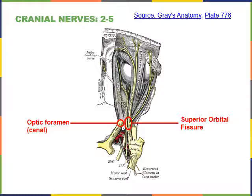Cranial nerve four extends from the midbrain to the superior oblique muscle, which causes rotation of the eye in its socket. The ophthalmic branch of cranial nerve five carries sensory information from the superior regions of the face including the skin around the orbits. Cranial nerve six also travels through the superior orbital fissure to excite the lateral rectus eye muscles.